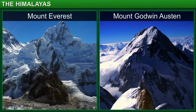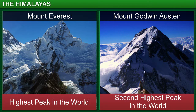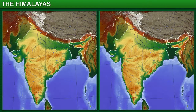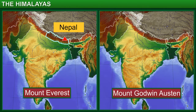For example, Mount Everest, the highest peak in the world, and Mount Godwin-Austin, the second highest peak in the world, are all part of this range. Mount Everest is located in Nepal, while Mount Godwin-Austin is in Ladakh in India.